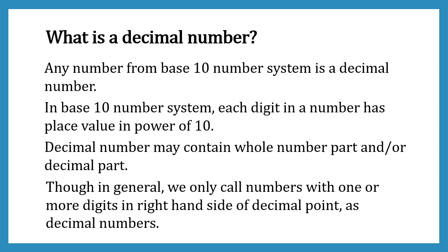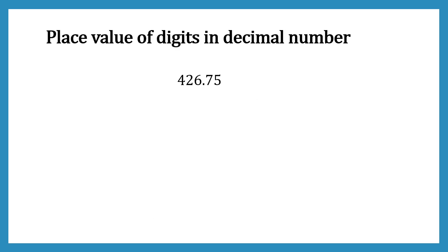Now let's look at a decimal number example. Here I have taken the decimal number 426.75. To learn the concept of multiplying and dividing a number with powers of 10, we have to understand the place value of its digits.